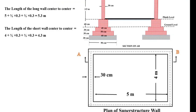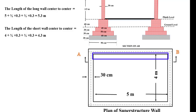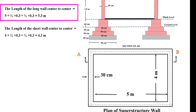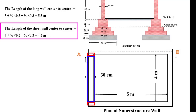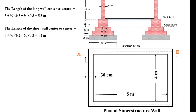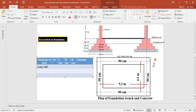First of all, we need to find the center-to-center length of the long wall and short wall. For the long wall, center-to-center length equals 5 meter plus half of the brick thickness (0.3m) on one side plus half on the other side, giving 5 + 0.15 + 0.15 = 5.3 meter. Similarly, for the short wall, center-to-center length equals 4 + 0.15 + 0.15 = 4.3 meter.